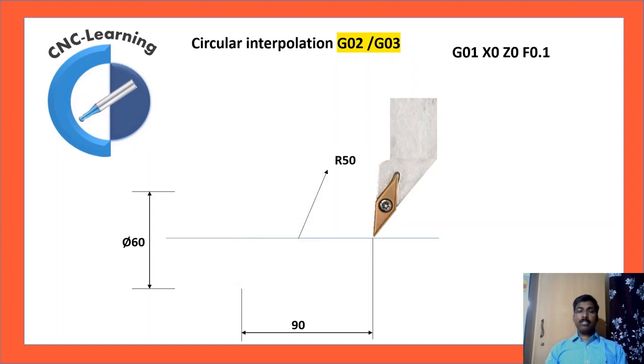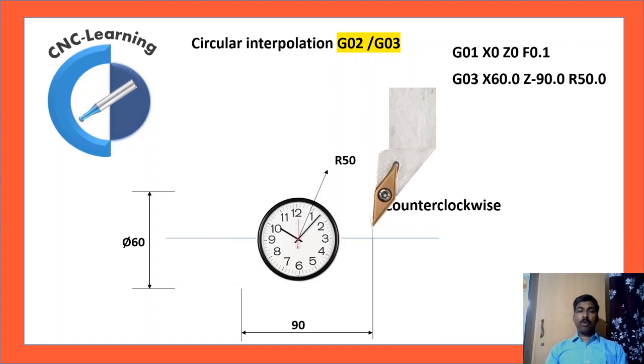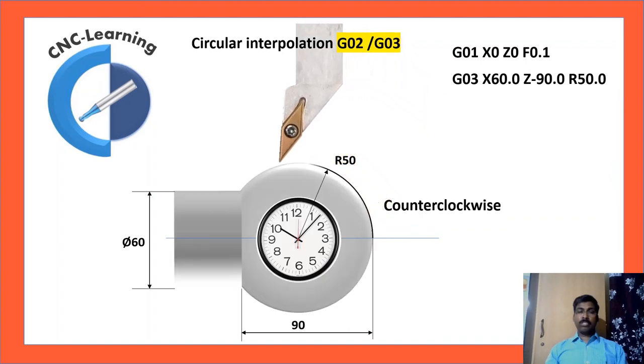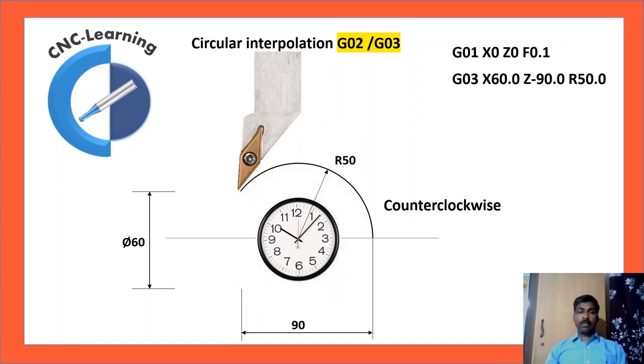Then circular interpolation. In this case, we have to do counterclockwise. So G03 and the end coordinates for end of the arc. In this case, it is diameter 60, so X60. Length is 90, so Z minus 90 and radius 50. So G03, X60, Z minus 90, R50.